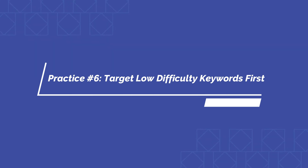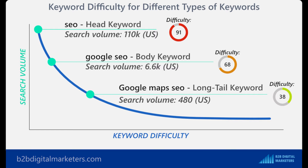The sixth important practice is to target low difficulty keywords first when you are starting out. The reason is quite obvious: you have a much bigger chance to rank for those keywords in top positions compared to competitive keywords. As a rule of thumb, easy-to-rank keywords are long-tail keywords compared to body or head keywords. However, it's better to always use an SEO tool to better understand the keyword difficulty.